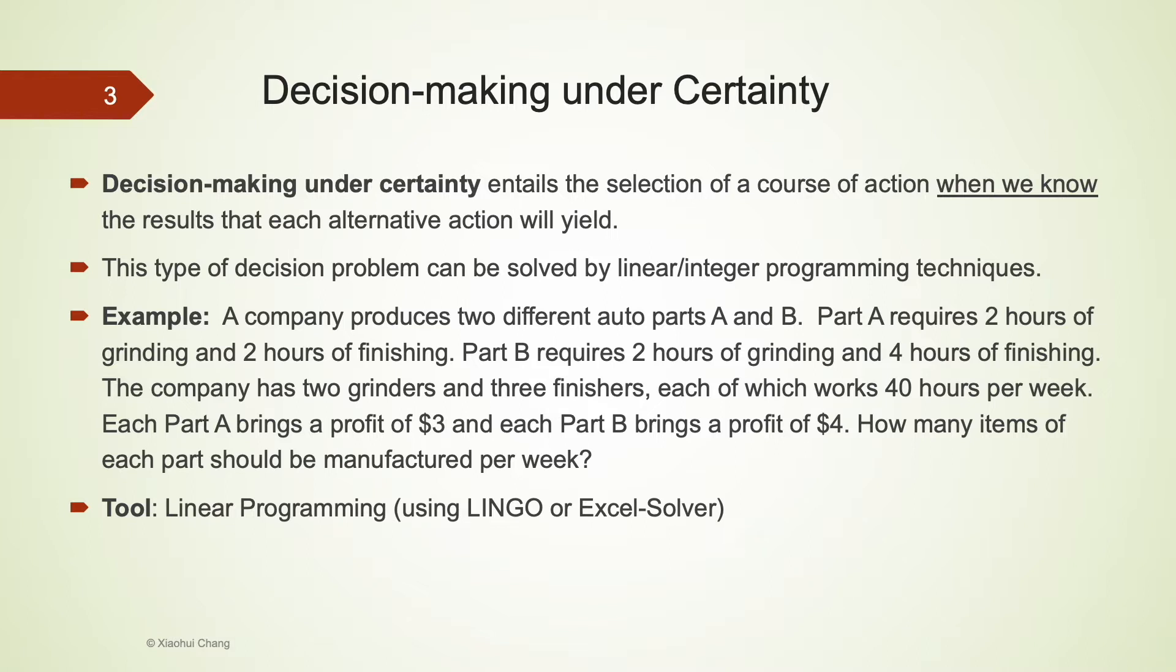This information includes how many hours it takes to produce each A and B, and the total number of machine hours available at the company. For this type of problem, decision-making under certainty, we will use linear programming to solve them.